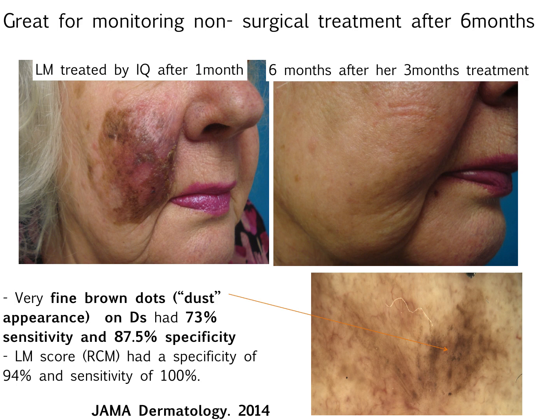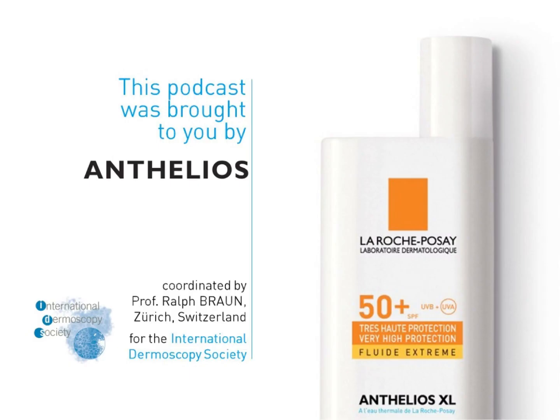An interesting finding in this paper was the presence of dust or little brown dots — actually single pagetoid cells migrating upward — on confocal microscopy. We found this feature has good sensitivity and specificity, performing better than the normal features of lentigo maligna that were often not present in treatment failure or recurrence. The lentigo maligna score worked quite well for diagnosis in these cases. I just want to thank you for listening to this podcast and encourage you to use confocal microscopy for this difficult patient population. Thank you.